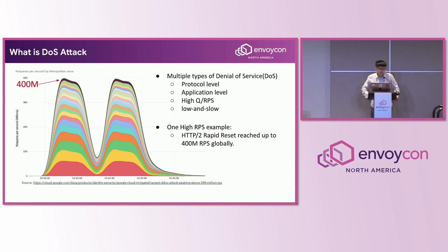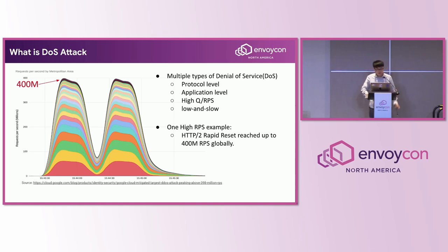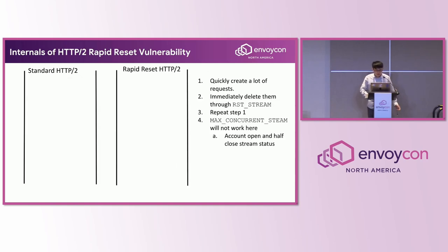Here is the diagram I want to cover today. It's from last year's industry-wide HTTP/2 Rapid Reset DOS attack. It is a purely very high QPS attack, reaching up to 400 million RPS globally for Google. These are a lot of malicious requests with the purpose of exhausting resources and preventing our server from serving normal traffic. Today, the focus is more on the CPU and memory impact, and how do we mitigate that in Envoy.